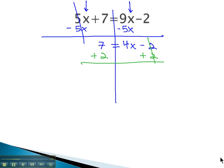Negative 2 plus 2 is 0, 7 plus 2 is 9, equals 4x.